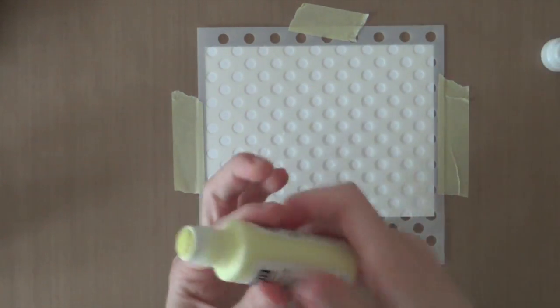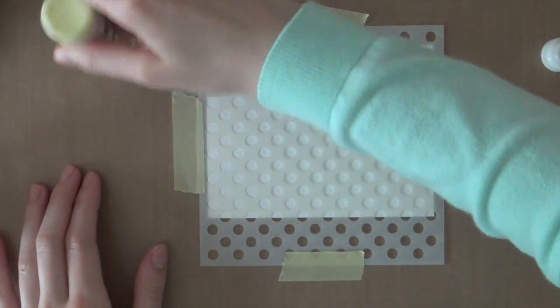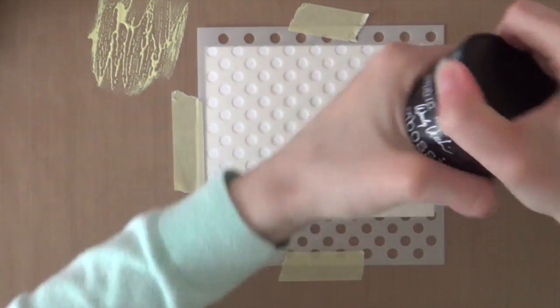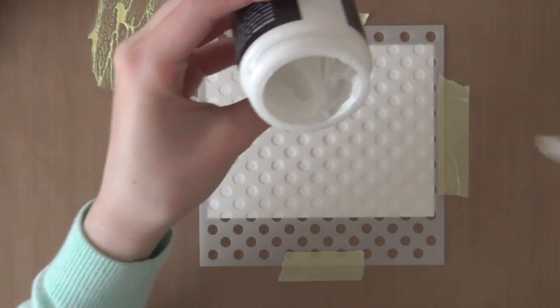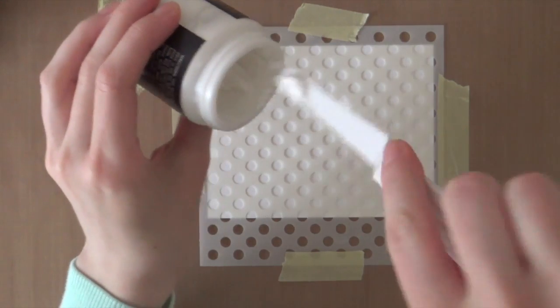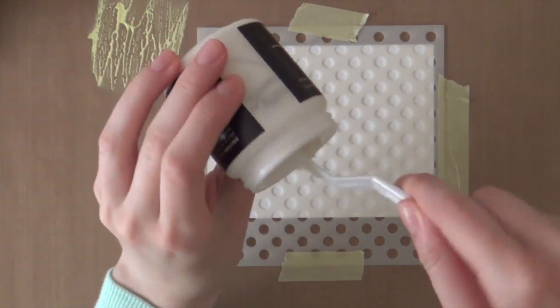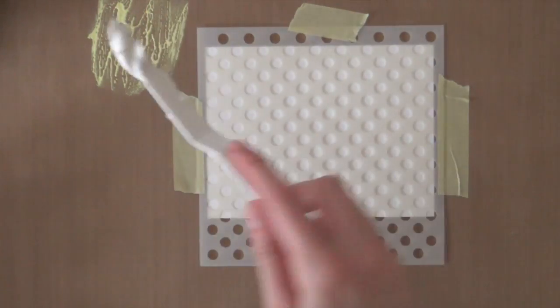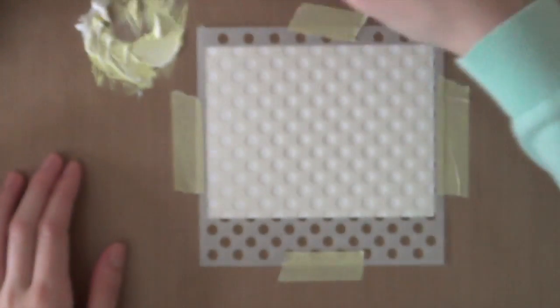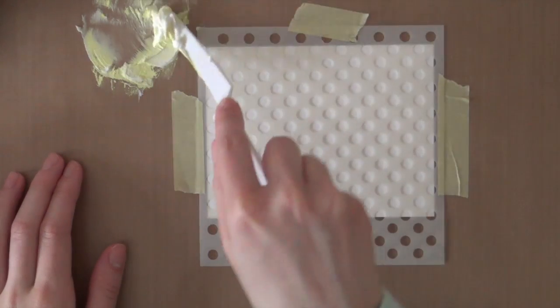And then I'm going to add the color onto my craft mat. So over here I have some Wendy Vecchi white embossing paste. And I'm going to scoop some out. I'm only going to use this amount. And then I'm going to mix the paste and the yellow ink dauber ink.